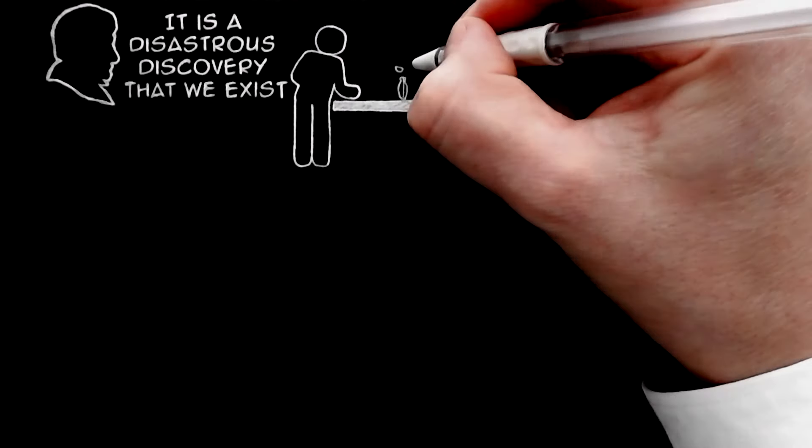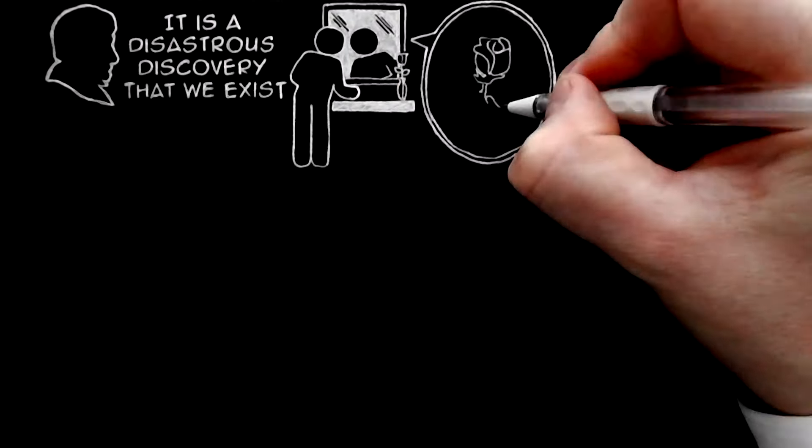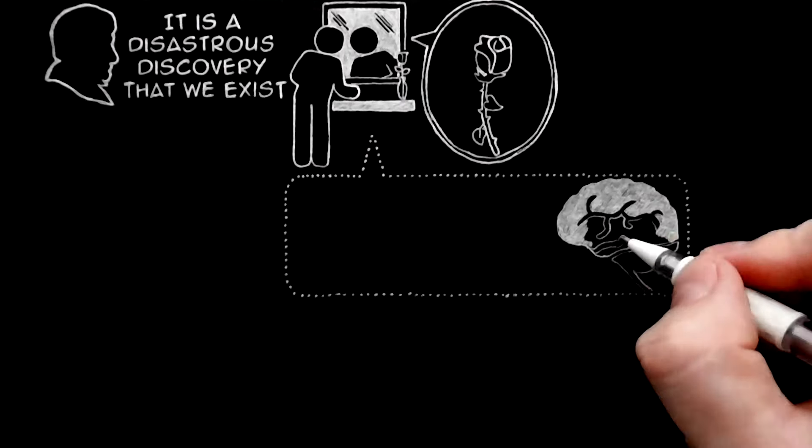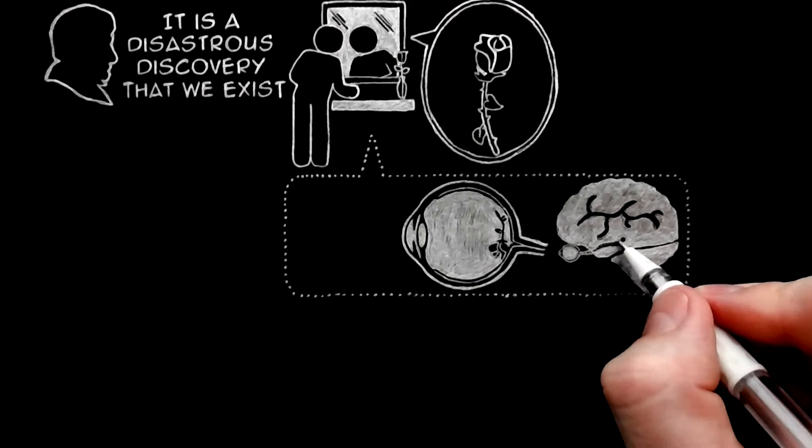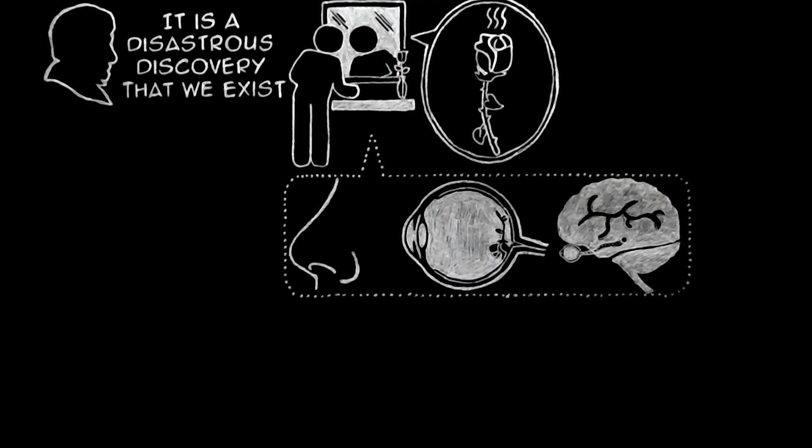We think of ourselves looking at the rose with a certain type of mind and a certain type of eyes. It is disastrous because if you are not very careful, the color of the rose gets attributed to our optic nerves and its scent to our noses, and in the end there is no rose left.